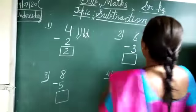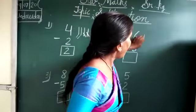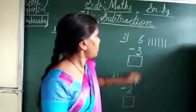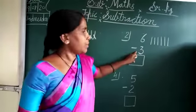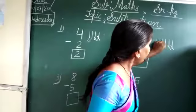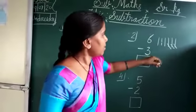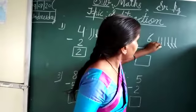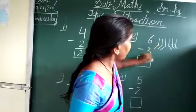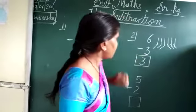Next, this number is 6. I make line 1, 2, 3, 4, 5, 6. Next number is 3. I will cut 3 lines: 1, 2, 3. So how many lines remain? 1, 2, 3. So the answer is 3.